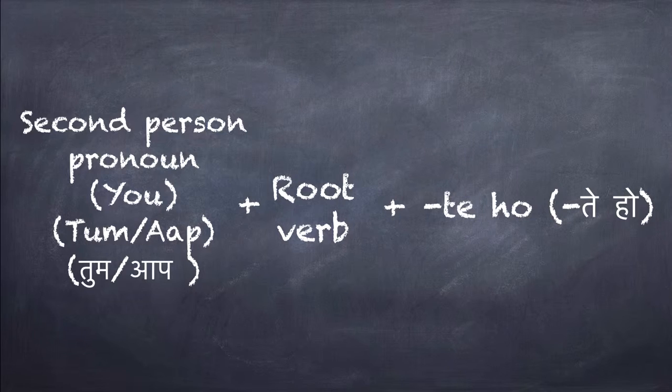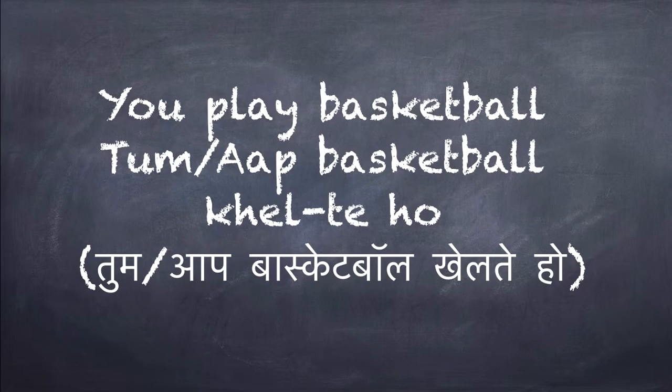Just to take an example: 'You play basketball.' The second person pronoun comes first, which will be either tum or aap. Then basketball is a noun, then 'khel' is your root verb, and 'te'. And the sentence ends with 'ho'. Tum basketball khelte ho, or aap basketball khelte ho.